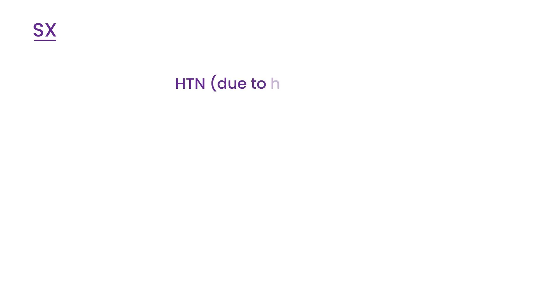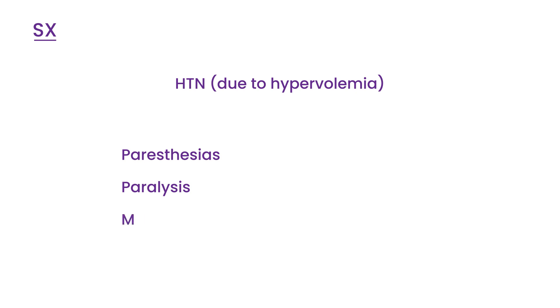What are the symptoms of primary aldosteronism? Without a doubt, high blood pressure will be a presenting factor due to the hypervolemia from all the water coming back. A patient may also present with paresthesias, paralysis, and muscle weakness. These symptoms are due to hypokalemia — low potassium in the blood — because aldosterone is kicking out potassium.